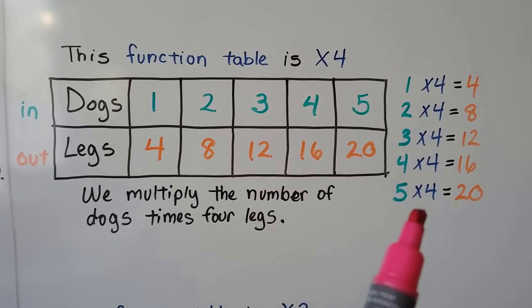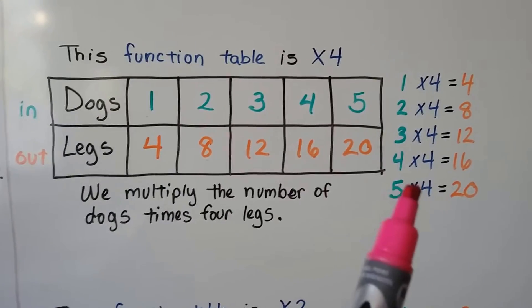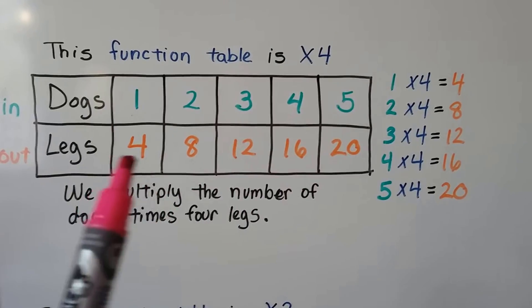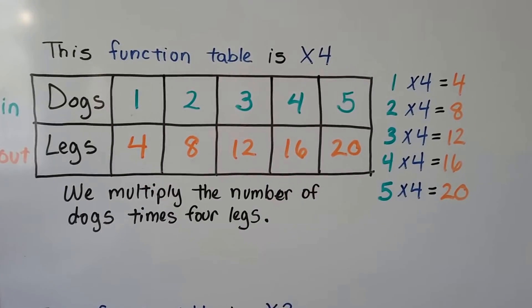You can see the pattern that it makes. Every single number is being multiplied by 4. So what comes out is 4 larger.